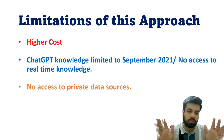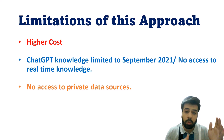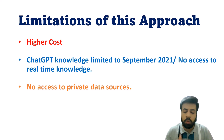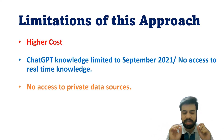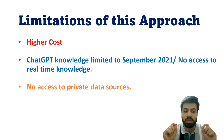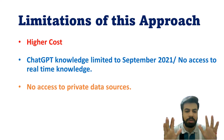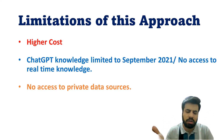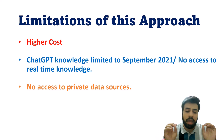ChatGPT has been trained on data only until September 2021. So if you ask it who won the World Test Championship recently, or who won the 2022 World Cup, ChatGPT will not be able to answer because it has no knowledge of events after September 2021.